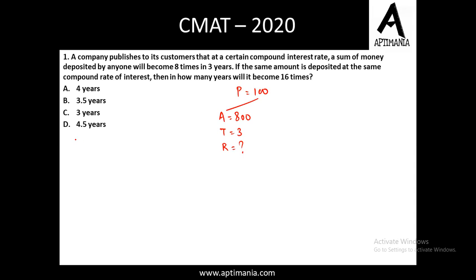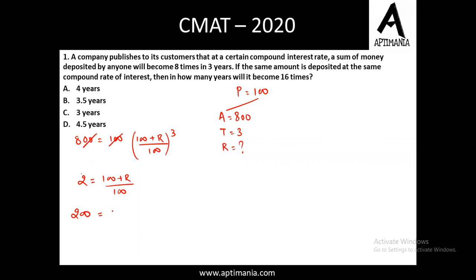So let's try to calculate the rate. The amount is equal to principal into (100 + r)/100 raised to the power 3. So 100s will get cancelled out. This cube will go on the other side and it will be cube root of 8, which is 2, equals to (100 + r)/100. On cross multiplying, we'll have 200 equals to 100 plus r, and on solving we'll finally get r equals to 100%.